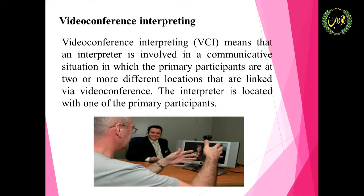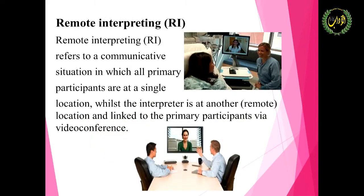We have video conference interpreting. This means the interpreter is involved in a communicative situation in which the primary participants are at two or more different locations linked via video conference, and the interpreter is located with one of the primary participants. Remote interpreting refers to a situation in which all primary participants are at a single location, whilst the interpreter is at another location, linked to the primary participant via video conference.